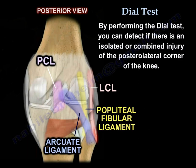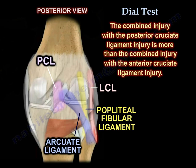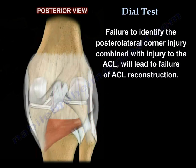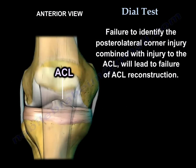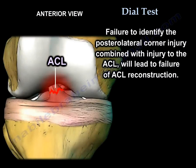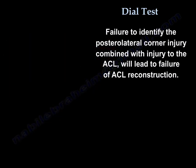By performing the Dial Test, you can detect if there is an isolated or combined injury of the posterolateral corner of the knee. Combined injury with the posterior cruciate ligament is more common than combined injury with the anterior cruciate ligament. Failure to identify a posterolateral corner injury combined with ACL injury will lead to failure of ACL reconstruction.